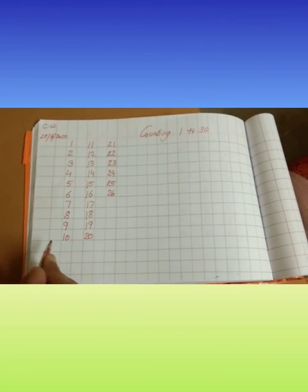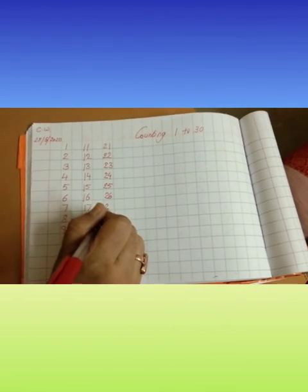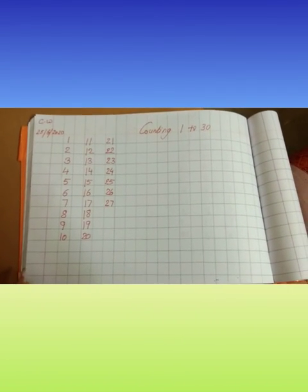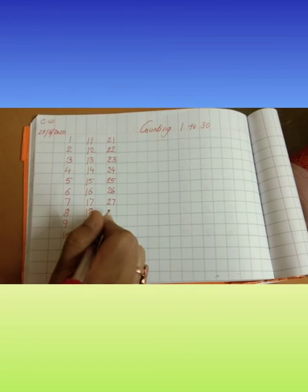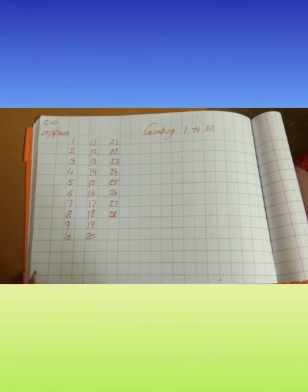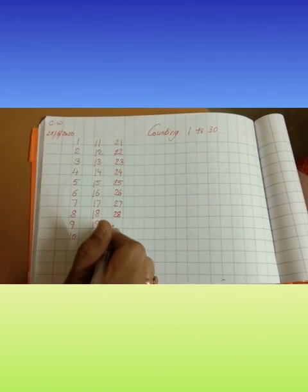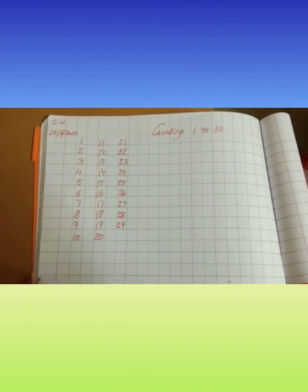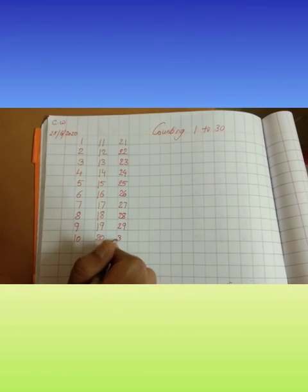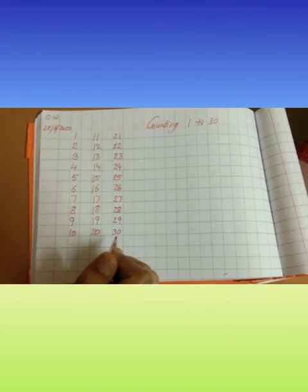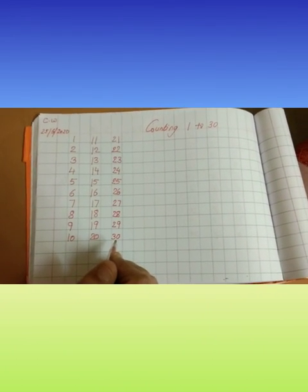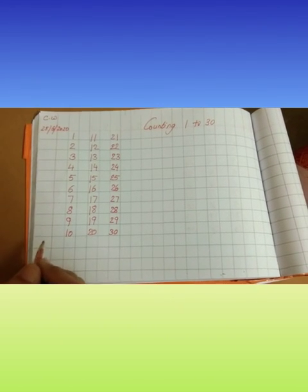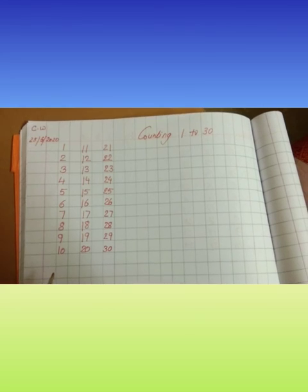2 and 6, 2, 6, 26. 2 and 7, 2, 7, 27. 2 and 8, 2, 8, 28. 2 and 9, 2, 9, 29. 3 and 0, 3, 0, 30. But children remember you have to write neat and clean. Ok. Now have a nice day. Thank you.